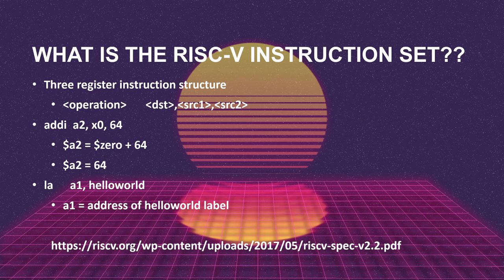What does an instruction in RISC-V assembly look like? It looks similar to the ARM instruction set: you have your operation, your destination register, your source one, and your source two. For load address, you have your operation, your destination, and then either a constant or a relative label. For example, the add immediate instruction — addi a2, x0, 64 — sets the a2 register equal to the zero register plus 64, so a2 equals 64. For address operations, like 'la a1, hello_world', it loads the relative offset of the label hello_world into a1.